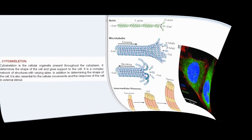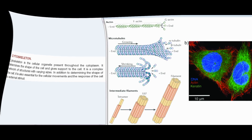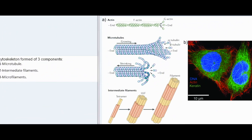Cytoskeleton is the cellular organelle present throughout the cytoplasm that determines the shape of the cell and gives it support. It is a complex network of structures with varying sizes. It is also essential for cellular movements and the cell's response to external stimuli. The cytoskeleton is formed of three components: microtubules, intermediate filaments, and microfilaments.